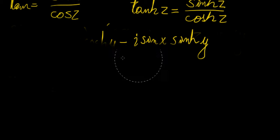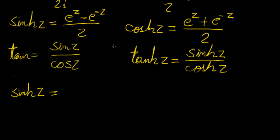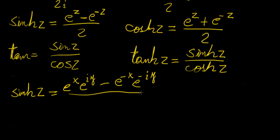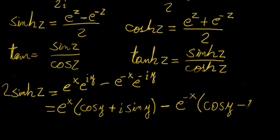Now let's derive an expression for the hyperbolic sine of a complex variable. Starting with sinh(z) = (e^z − e^(−z)) / 2 and substituting z = x + iy, we get (e^(x+iy) − e^(−x−iy)) / 2 = (e^x·e^(iy) − e^(−x)·e^(−iy)) / 2. Applying the Euler identity: e^(iy) = cos y + i sin y and e^(−iy) = cos y − i sin y.